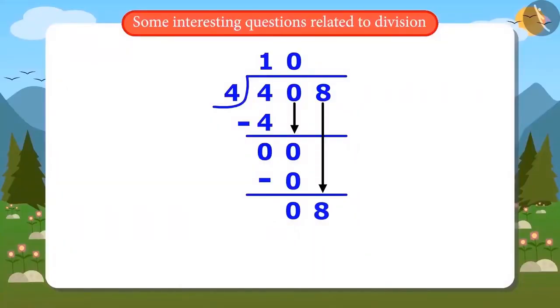Now, write down 8 and divide 8 by 4. The answer is 2 because 4 multiplied by 2 is 8 and the remainder is 0. This means that 408 divided by 4 is 102.